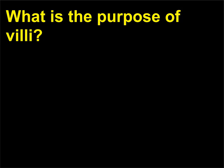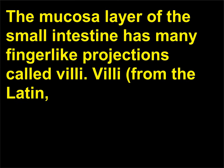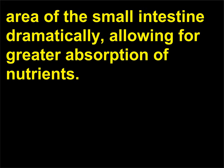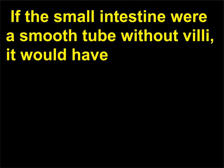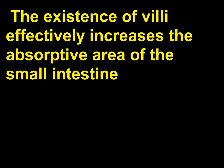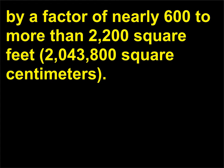What is the purpose of villi? The mucosa layer of the small intestine has many finger-like projections called villi — from the Latin meaning 'shaggy hairs' — and the smaller microvilli increase the surface area of the small intestine dramatically, allowing for greater absorption of nutrients. If the small intestine were a smooth tube without villi, it would have a total absorptive area of 3.6 square feet (3,344 square centimeters). The existence of villi effectively increases the absorptive area by a factor of nearly 600 to more than 2,200 square feet (2,043,800 square centimeters).